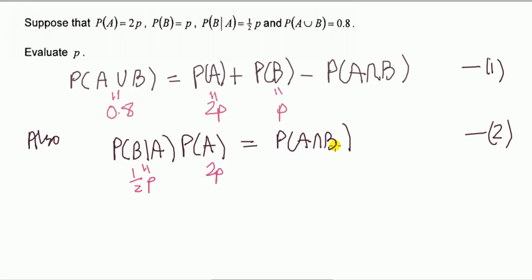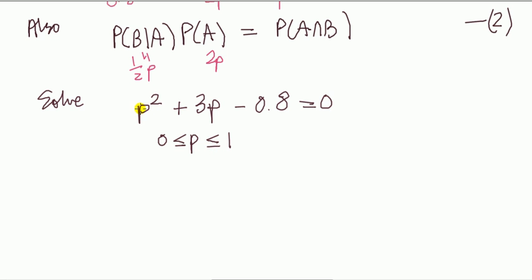Just equate, just substitute for probability A and B from equation 2 into 1. So we end up having to solve a quadratic, but we note that also because P is a probability, it takes interval values 0 to 1.